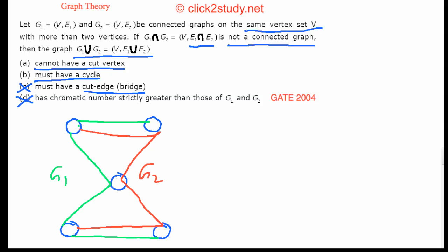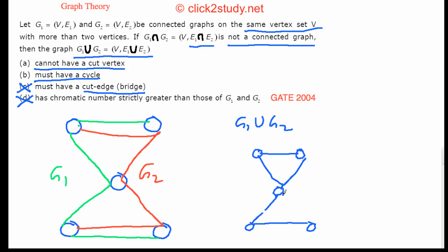The example is valid. Now for G1 ∪ G2, taking all the edges together, you get a graph like this. Look at this central vertex — a cut vertex is one whose removal disconnects the graph. If I remove this vertex, the graph splits into two separate components. So we have a counter-example for option A: 'cannot have a cut vertex' is false, and we eliminate option A.